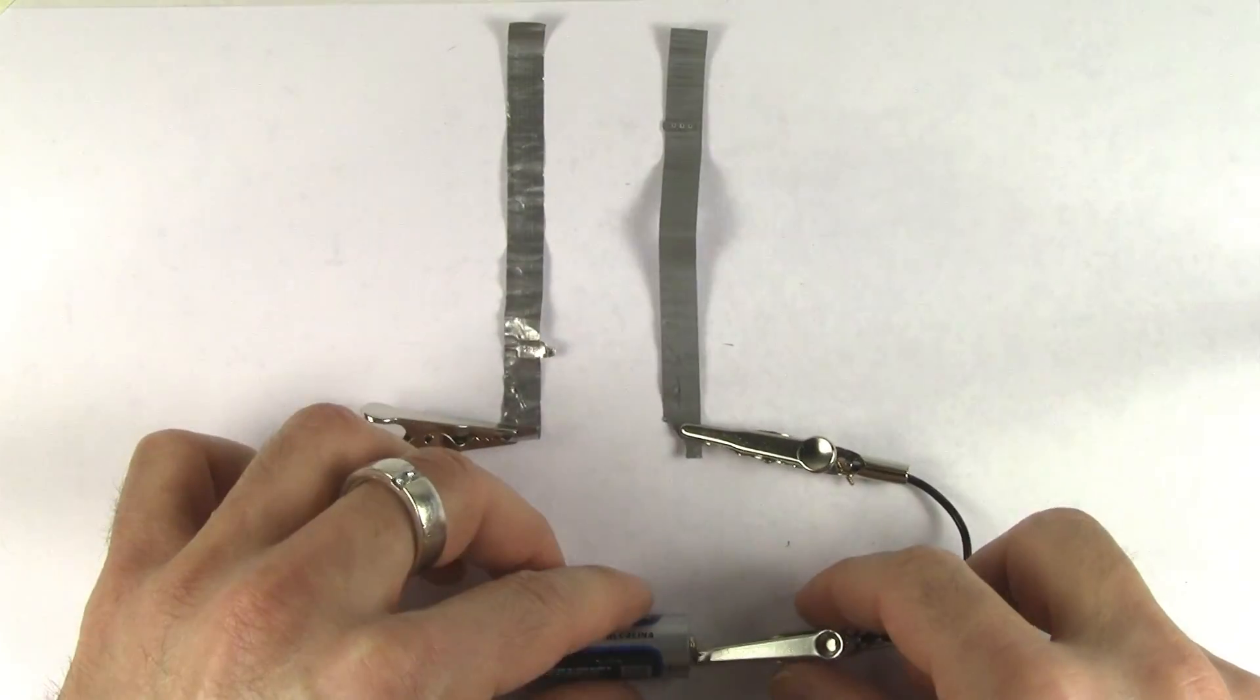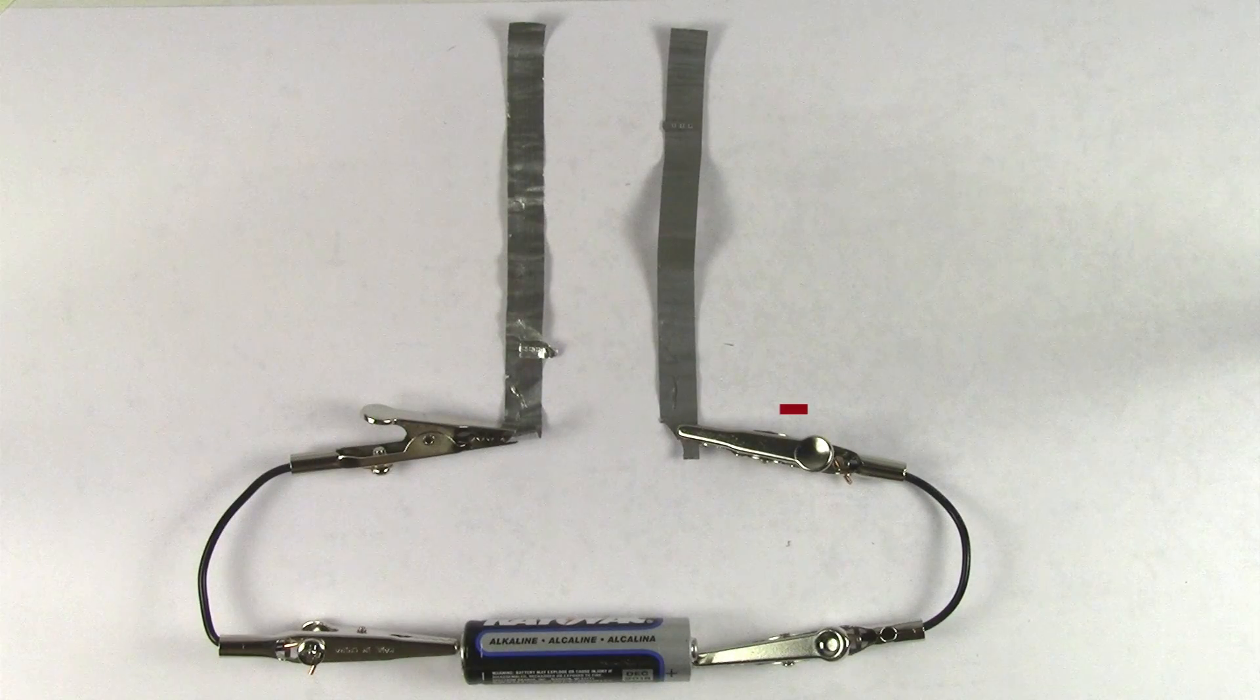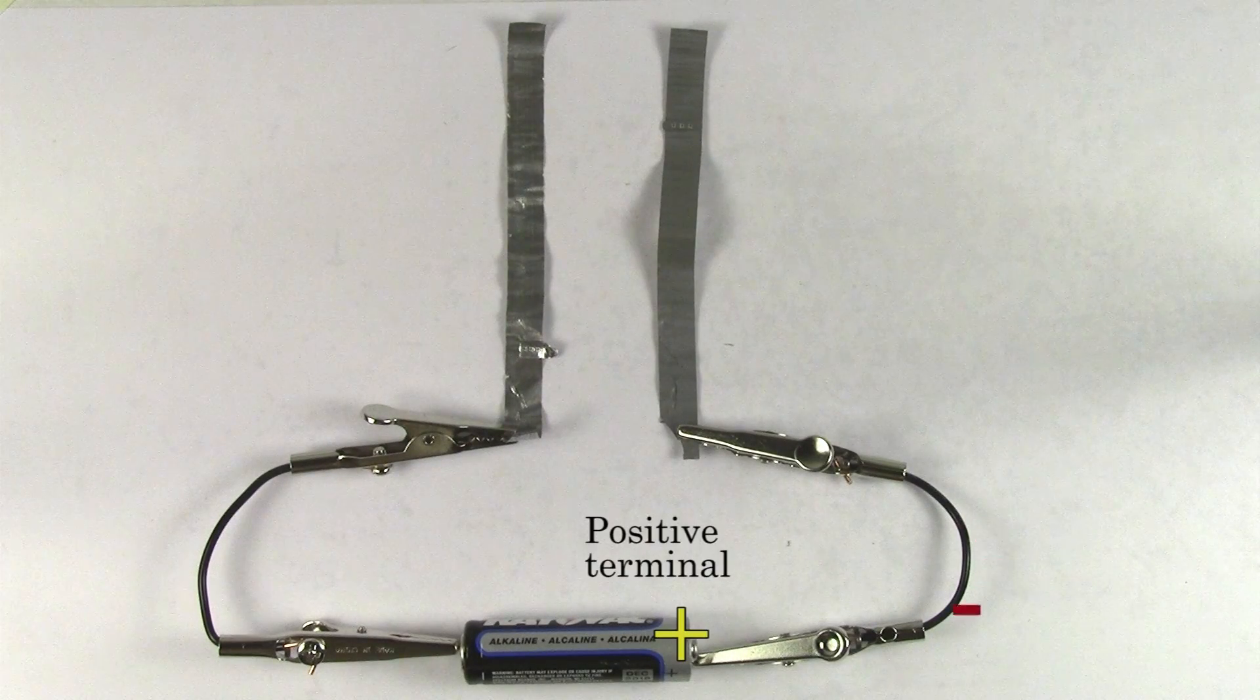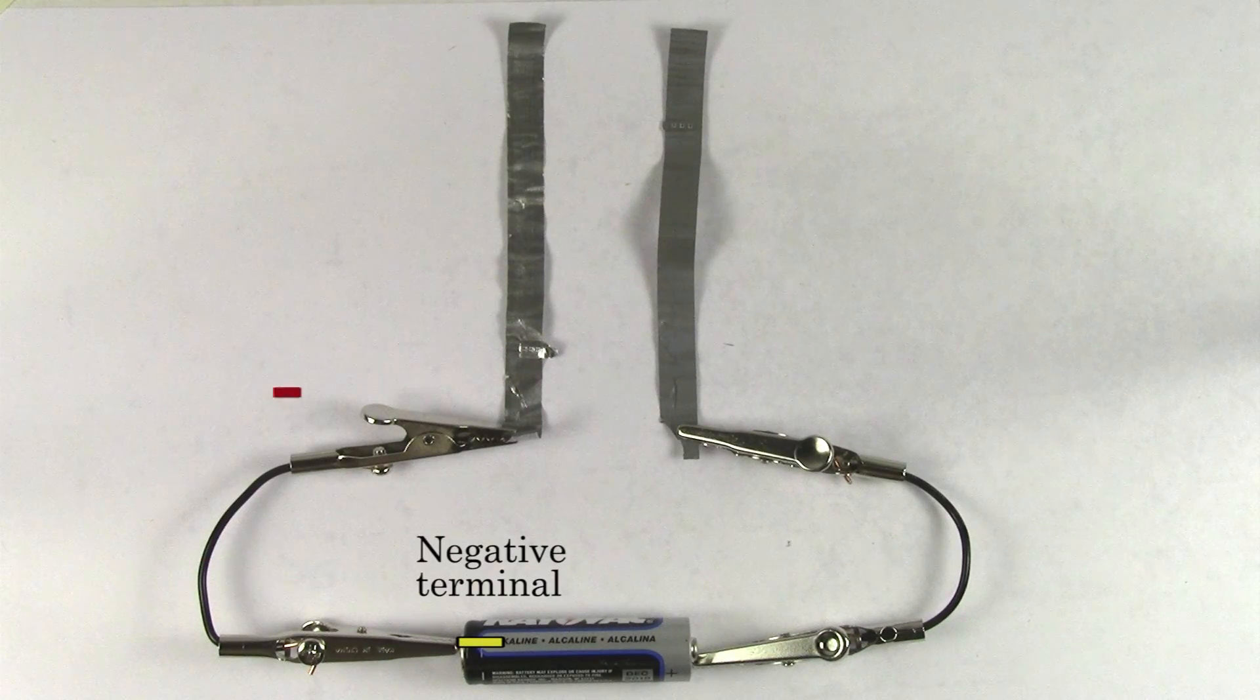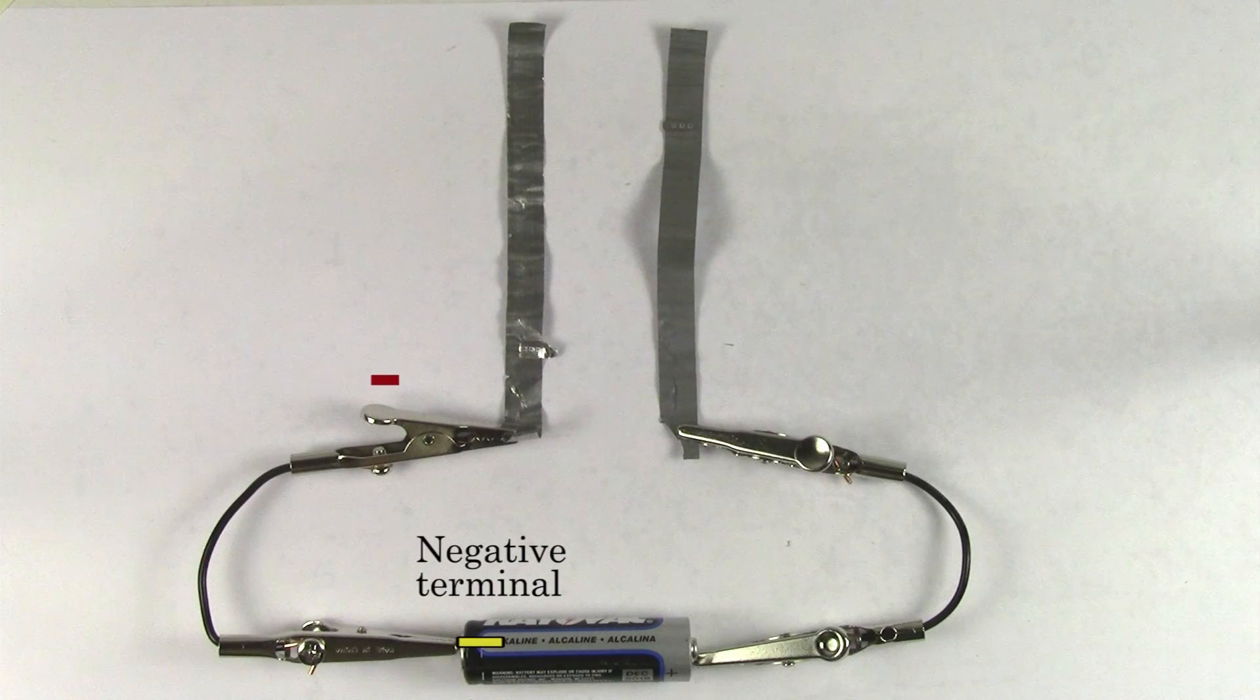Once the battery is connected, negative charges on the right side get attracted towards the positive terminal of the battery. And on the left side, negative charges get repelled away from the negative terminal of the battery.